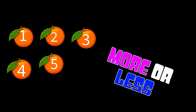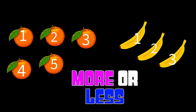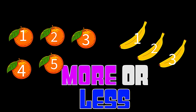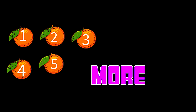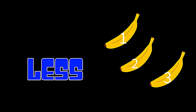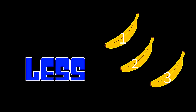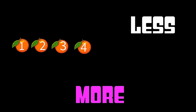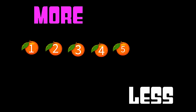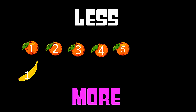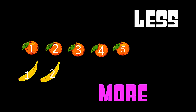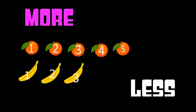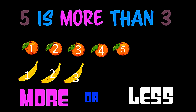More or less. Are there more peaches than bananas? There are more peaches. There are less bananas. One, two, three, four, five — there are five oranges. One, two, three — there are three bananas. Five is more than three.